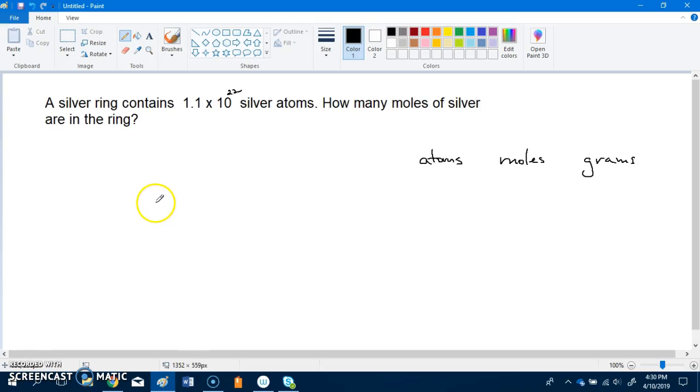Hi and thank you for your question. So you'd like me to show how to solve this question where we have a silver ring that contains 1.1 times 10 to the 22 silver atoms. How many moles of silver are in the ring?